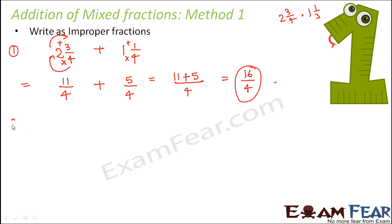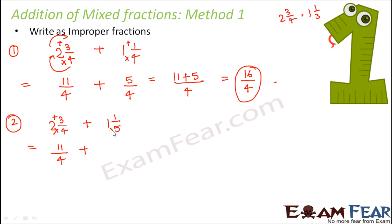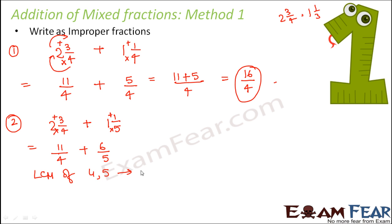Let's take another example with unlike fractions. We have to add 2¾ + 1⅕, so these have different denominators — they are unlike. We still convert to improper fractions first: 4×2 = 8, plus 3 = 11, so 11/4. And 5×1 = 5, plus 1 = 6, so 6/5. Next we find the LCM of 4 and 5, which is 20.